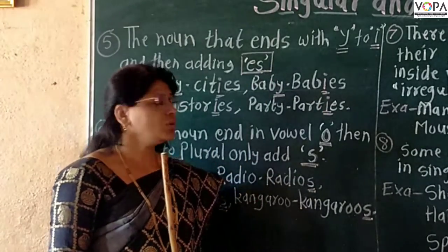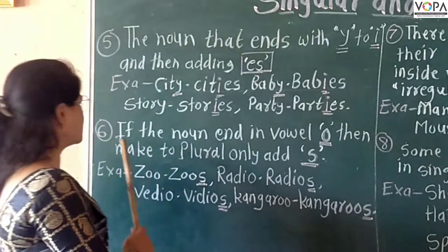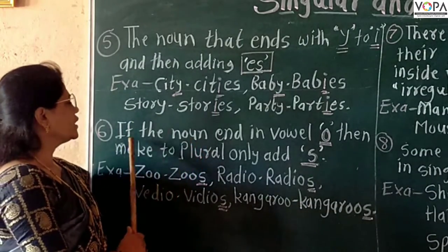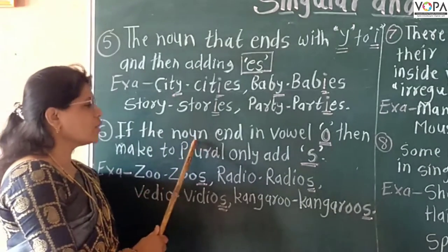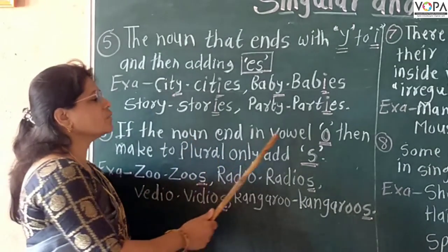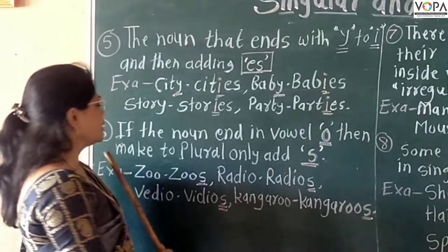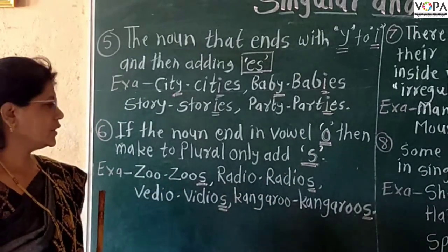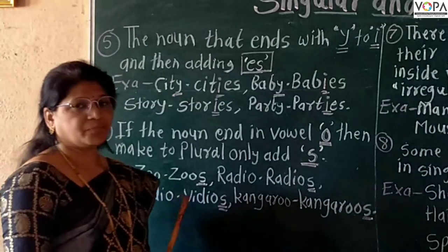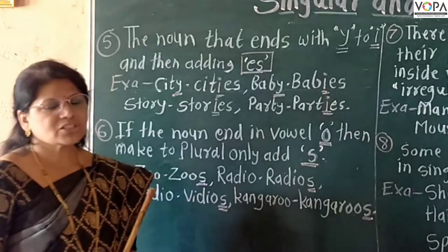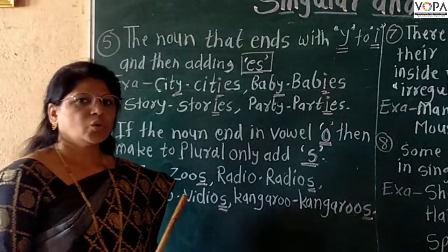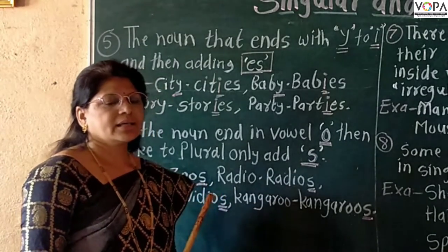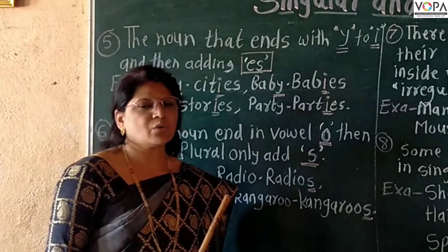Now let's see rule number 6. If the noun ends with the vowel o, then make the plural by adding -s. But if the noun itself ends in a consonant before the o, add -es.